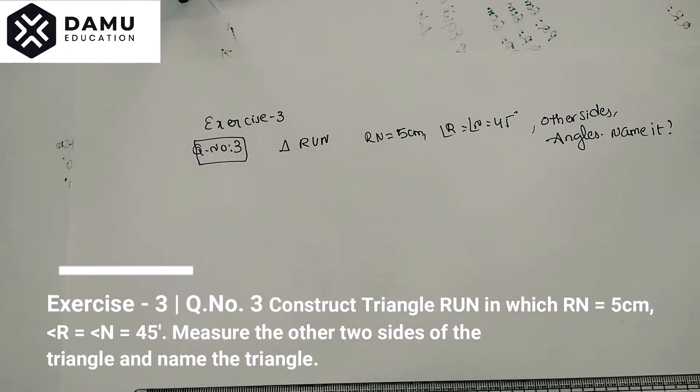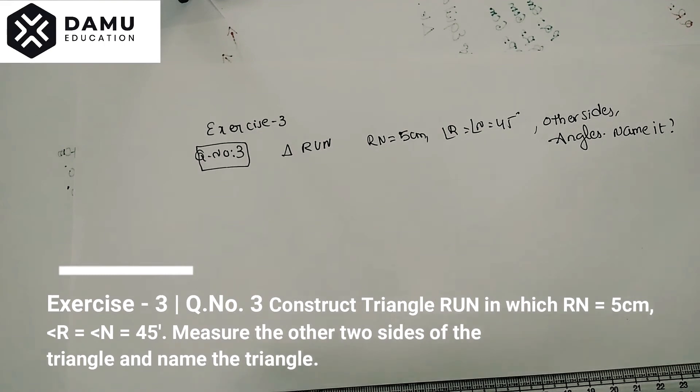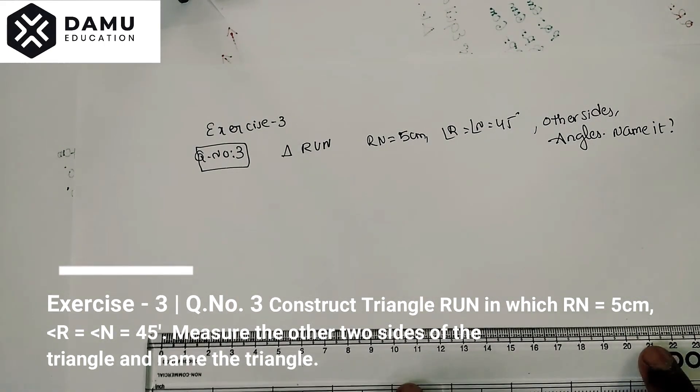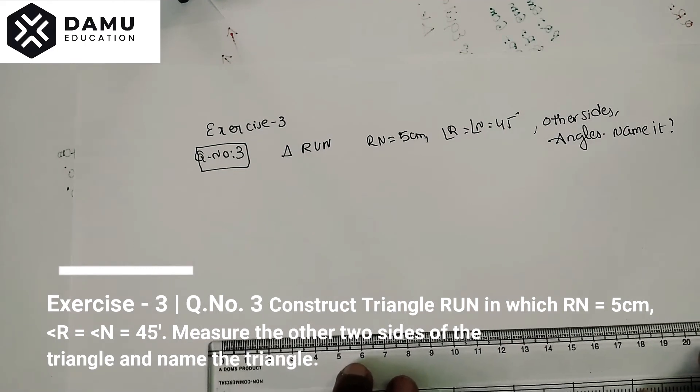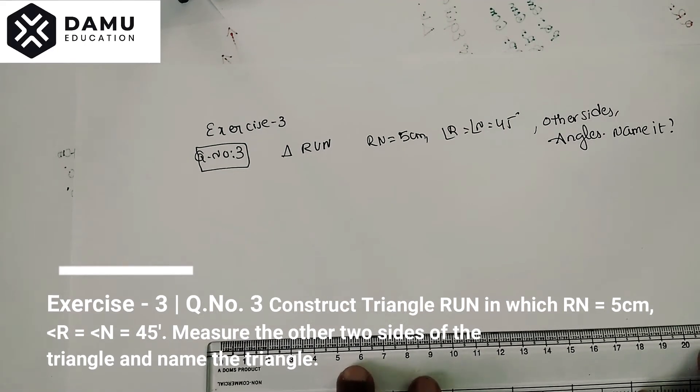Hello viewers, in this question we are going to discuss how to construct a triangle RUN with a given RN of 5 centimeters. First, we are going to draw RN while keeping it horizontal on the scale.